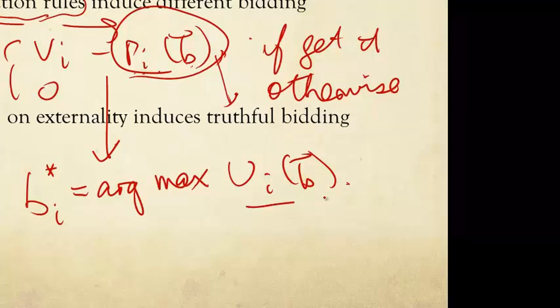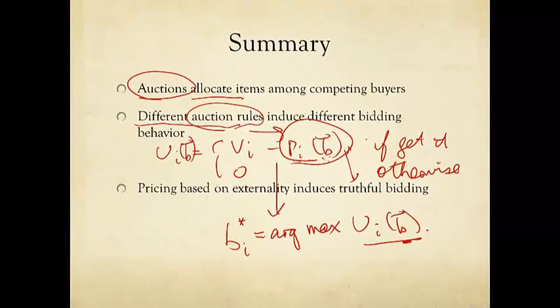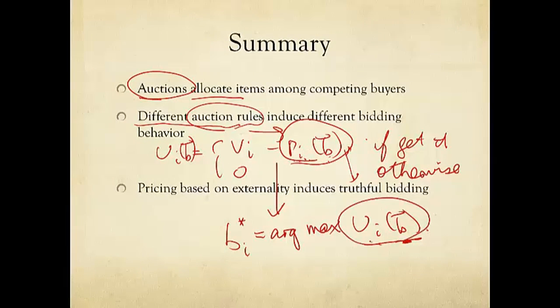Now, of course, utility depends not just on my own bid, thus the complication in strategizing in the game, but it partially depends on me, and depending on your allocation and pricing system, we will have a different utility function, and therefore I will be maximizing different functions to induce the best Bi star bidding behavior for me. And everybody thinks the same way.